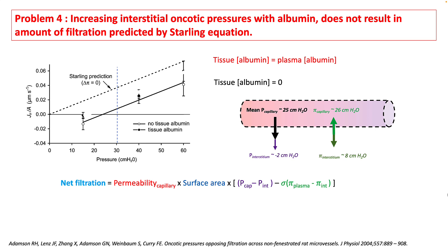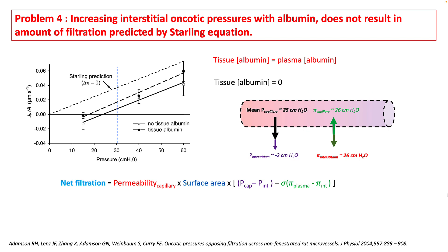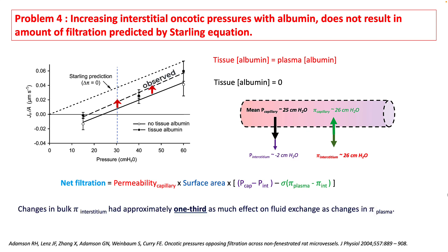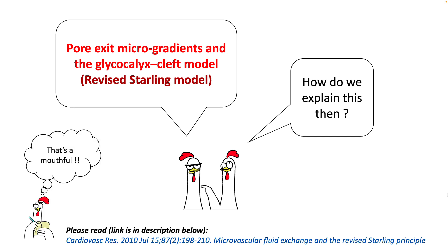In an interesting experiment, Adamson and colleagues increased interstitial oncotic pressure to match plasma oncotic pressure. You would expect that as the oncotic pressure difference drops, net filtration would rise. However, they found that the rise in net filtration was only one third of what was predicted by the Starling Equation. To explain all this, a new model has been proposed — the pore-exit micro-gradient and glycocalyx cleft model, simply called the revised Starling model.